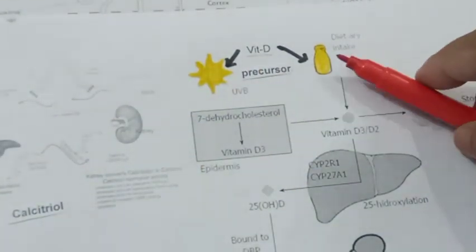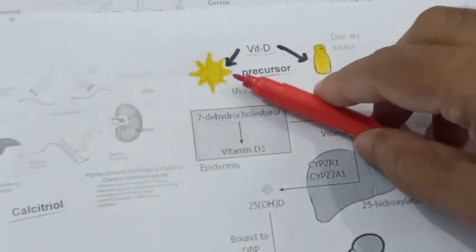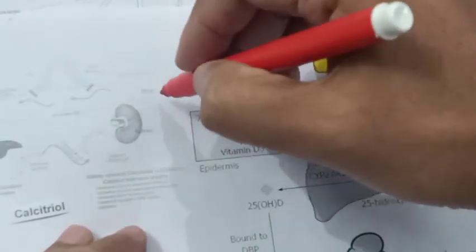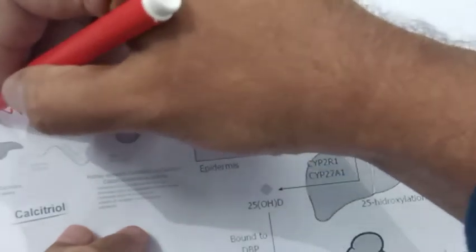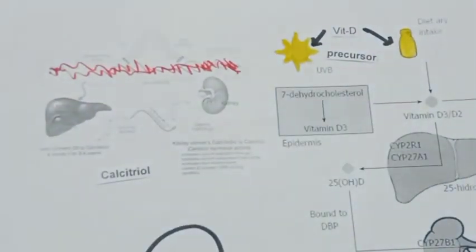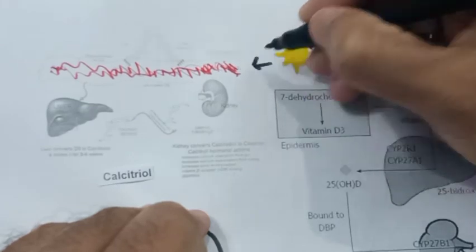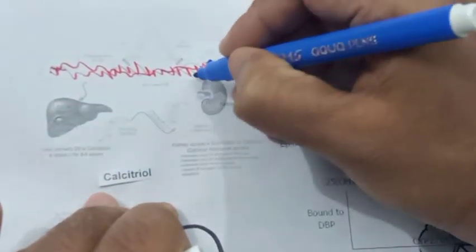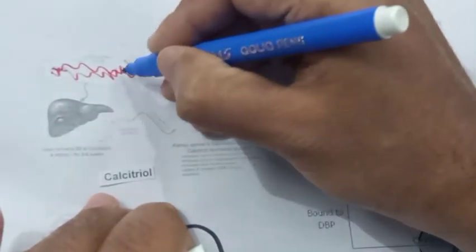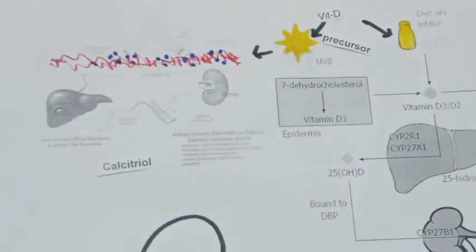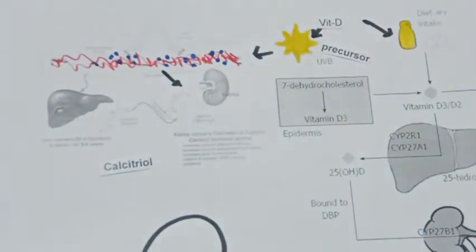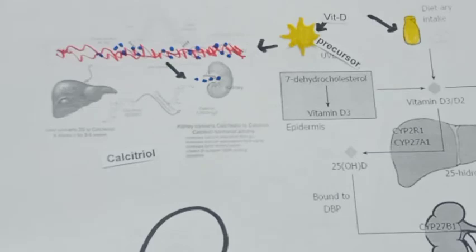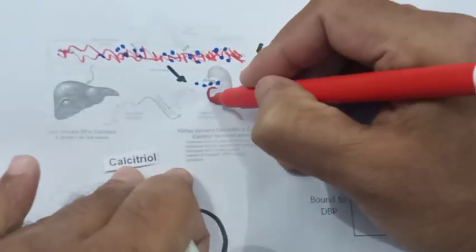This inactive form of vitamin D, absorbed from the diet and from sunlight via the skin, goes into the blood circulation. The inactive precursor form of vitamin D moves inside the blood and then goes into the kidney.